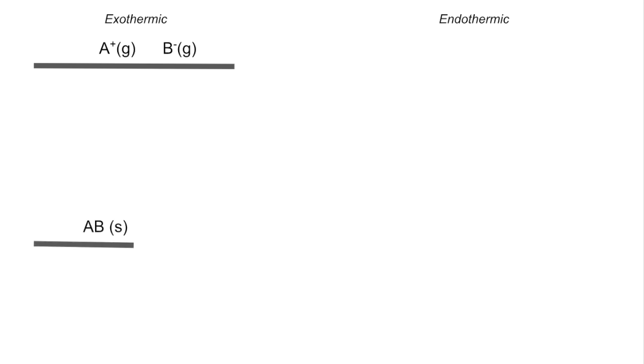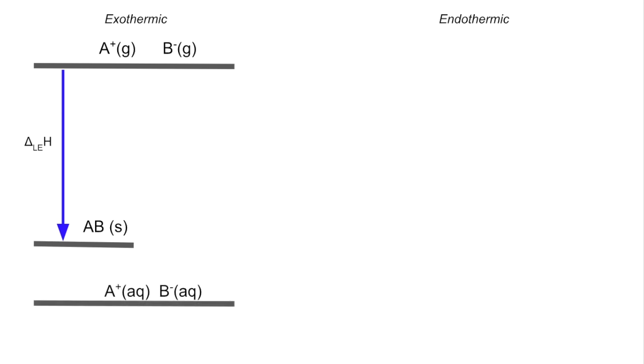Moving on to the cycles — we'll look at the exothermic one first on the left hand side, then the endothermic one on the right. We start with the highest energy particles, the gaseous ions. Bringing them together to form one mole of the solid gives the lattice enthalpy. For this exothermic cycle, when the AB solid dissolves in water to form aqueous ions, it releases energy, so they appear below the line for the AB solid — that's the exothermic enthalpy change of solution.